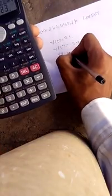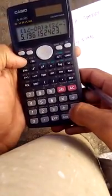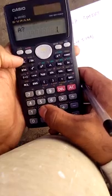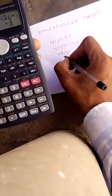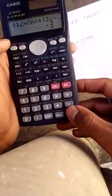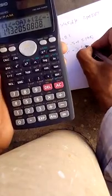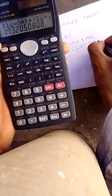X(2) is equal to minus 3, and also check for imaginary term. Press shift and equals: plus 5.196j.